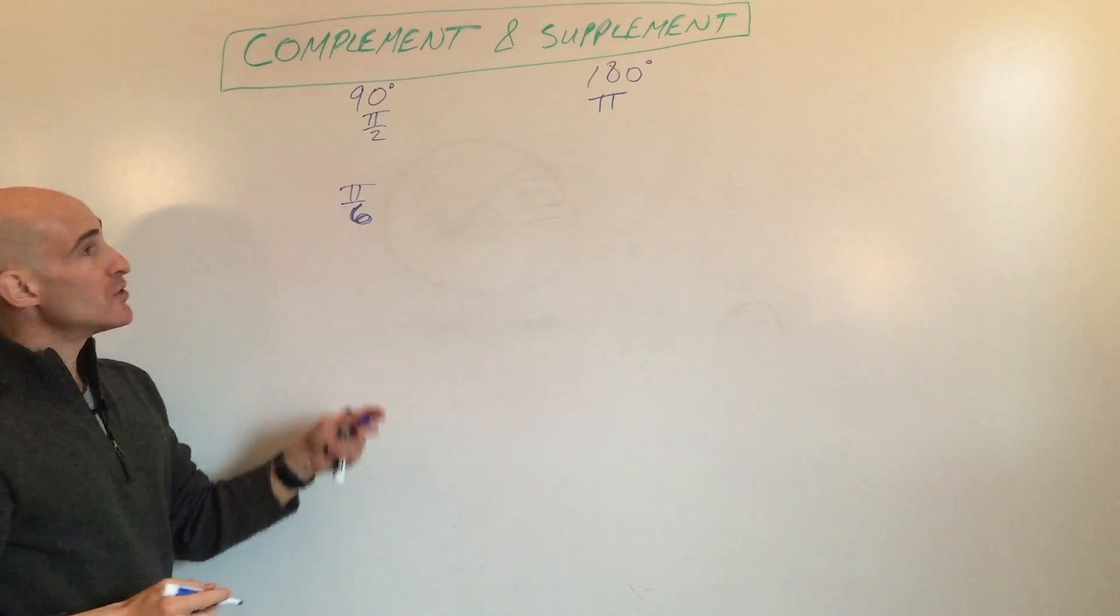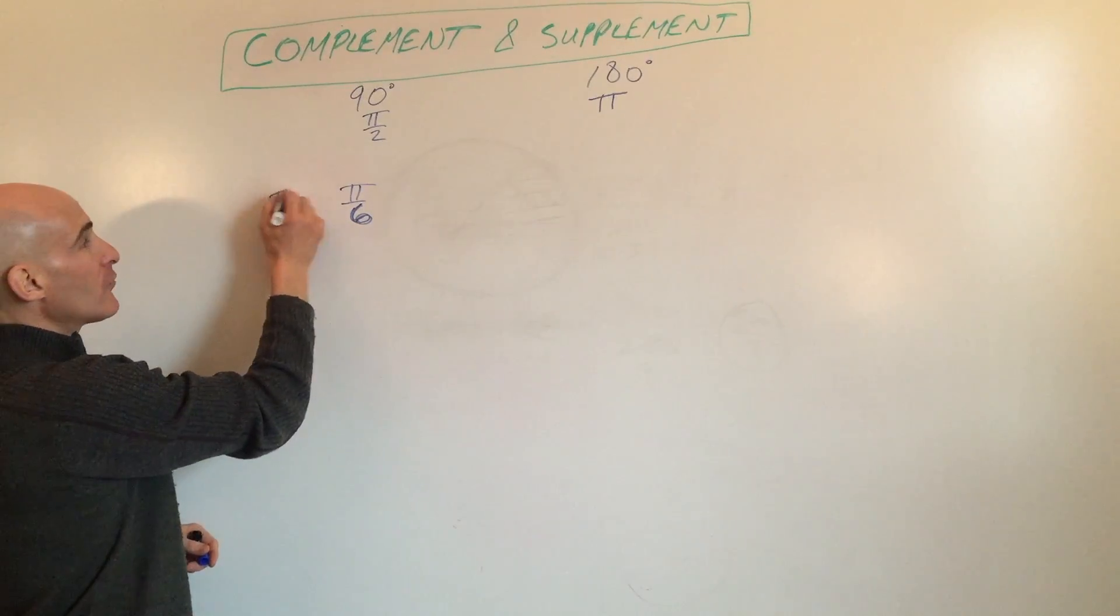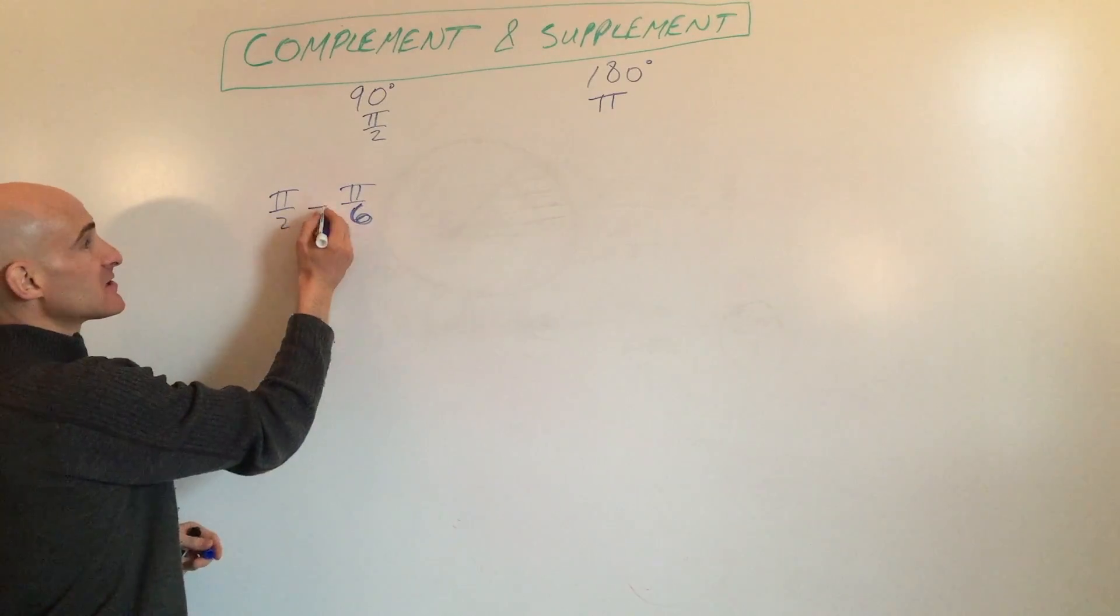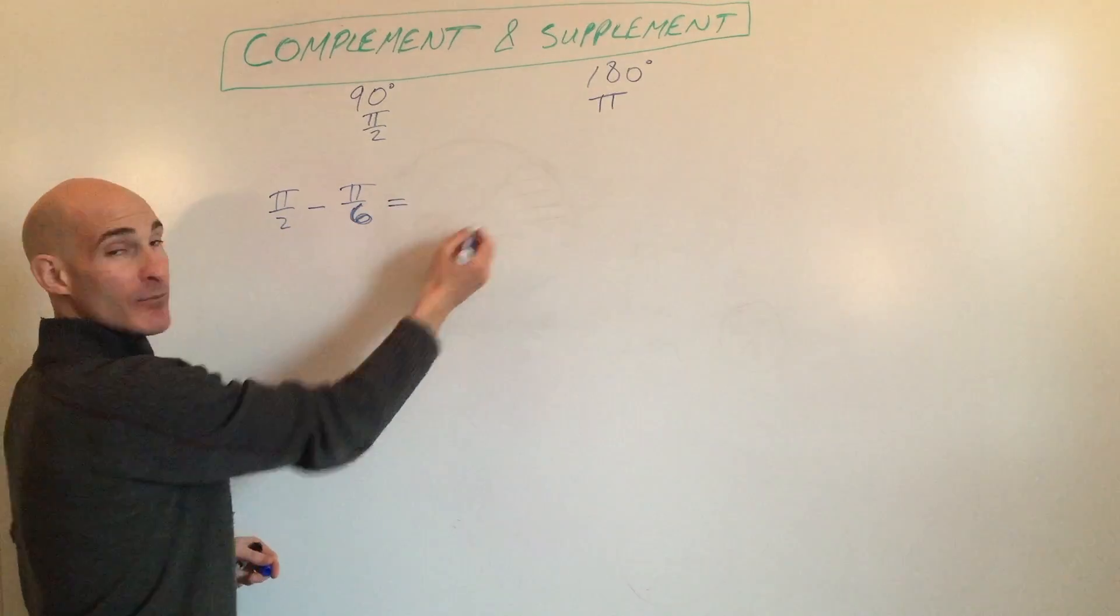So what you would do is you would take π over 2, which, remember, is 90 degrees, minus π over 6, and that's going to give you your complement.